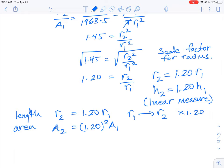Because remember that area is made up of the radius being squared. So going from A1 to A2, we have to multiply by a factor of 1.2 squared.